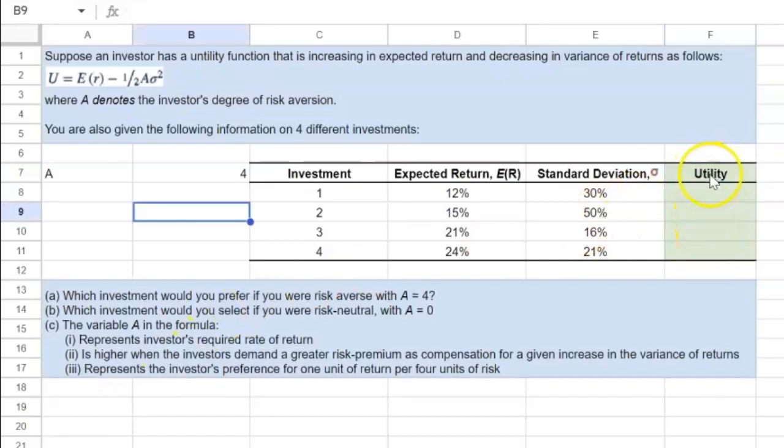So after formatting this column to make it look nice and pretty, I can calculate utility using this utility function. For instance, from the first investment, the utility that I will get will be equal to the expected return, which is 12%, minus half, which is 0.5,